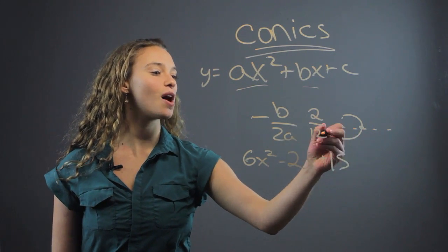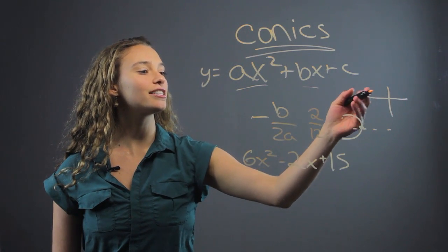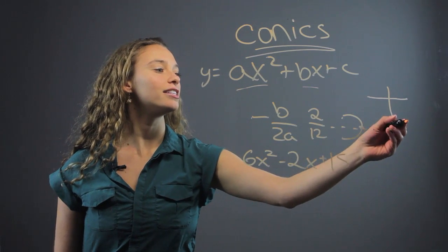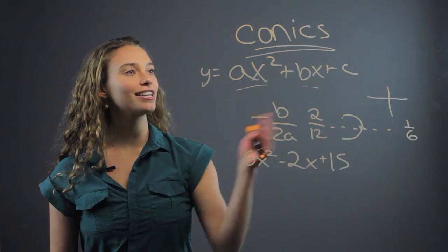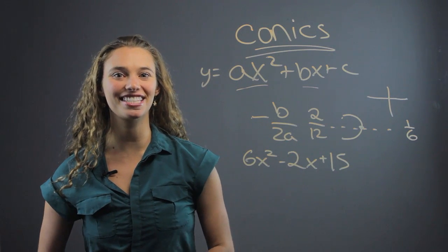So, when we're graphing the parabola, the vertex is going to be at 1 sixth. And that's an example of a quadratic conic problem. I'm Rachel, and thank you for learning with me today.